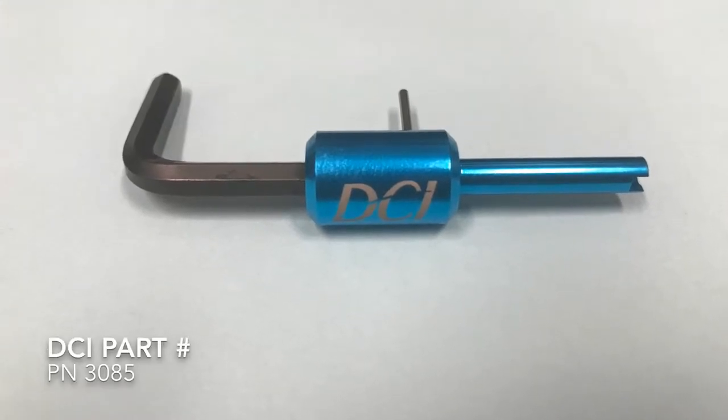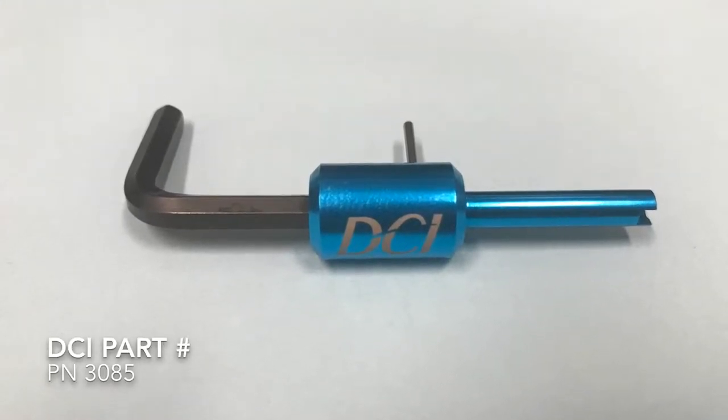Hey guys, it's Eric. Today I'm going to show you how to change out the buttons on your air water syringe. We're going to use the DCI part number 3085 air water syringe tool.